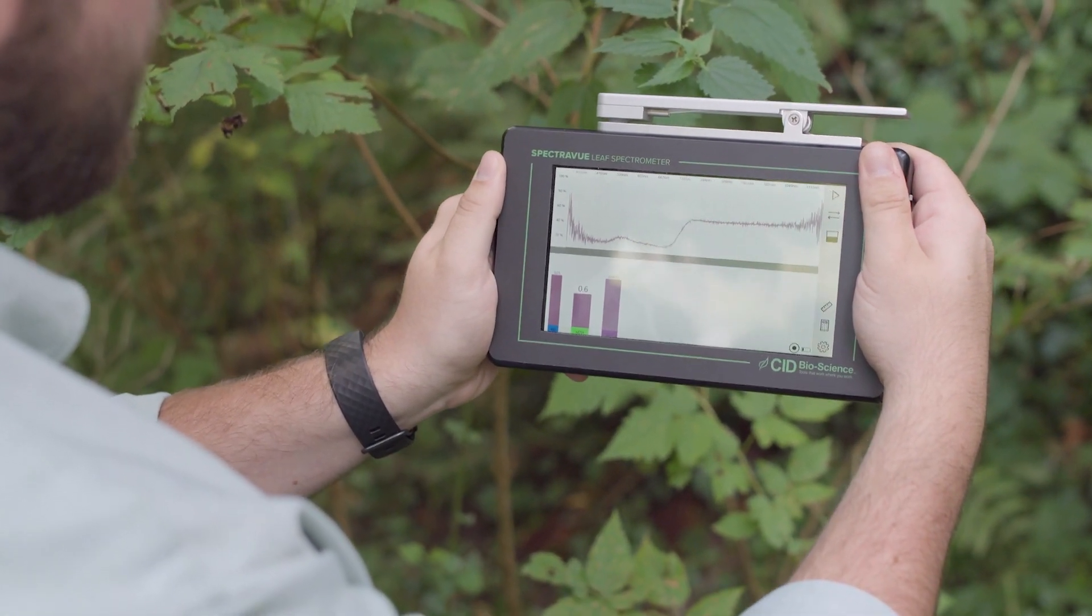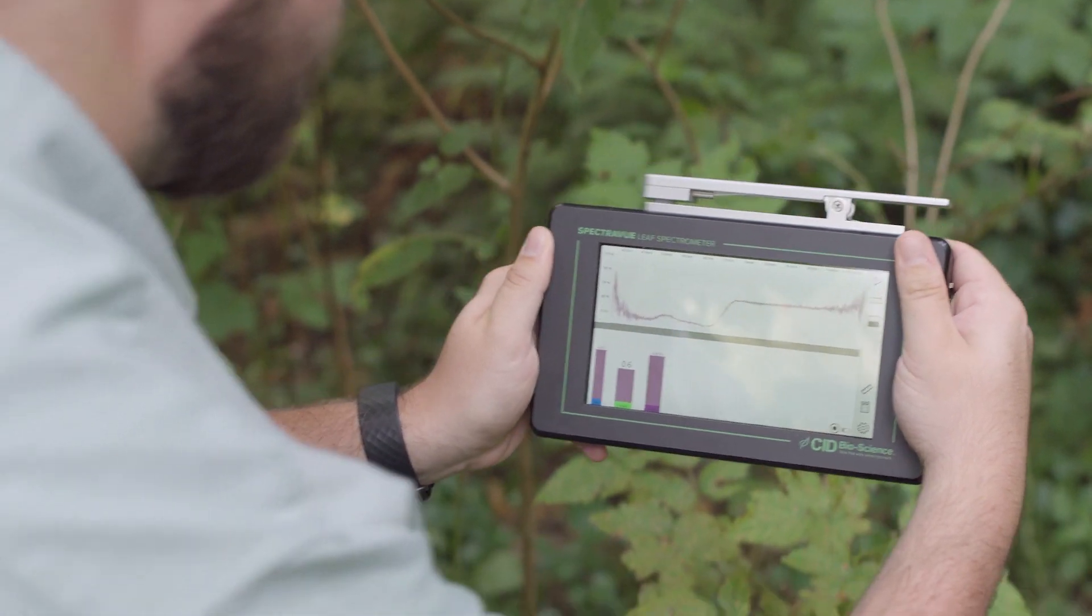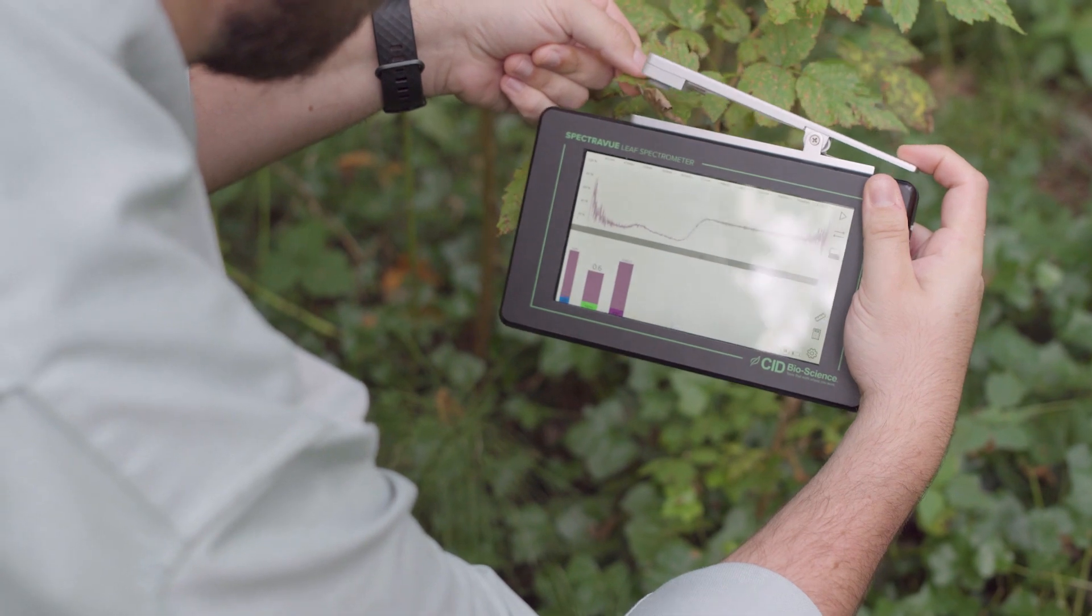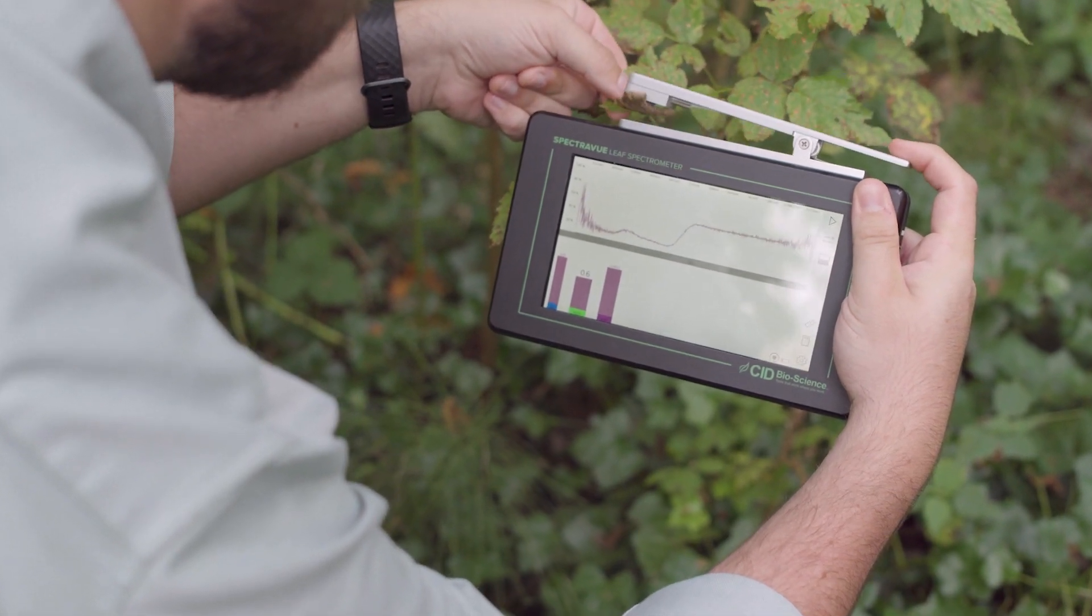So now we're going to go down and scan an unhealthy leaf. We're going to take it, do the same thing, and we're going to position it so that it's covering the entirety of the lens.